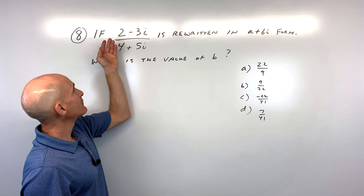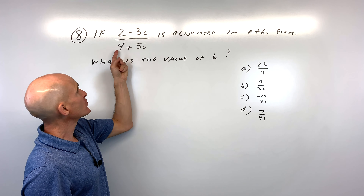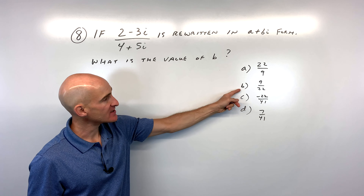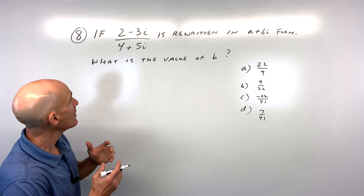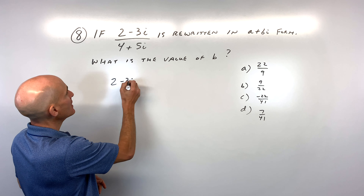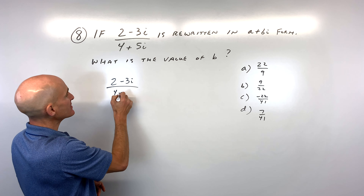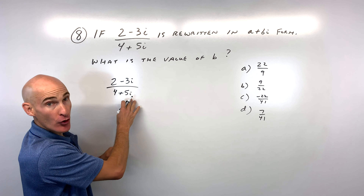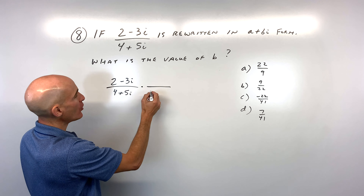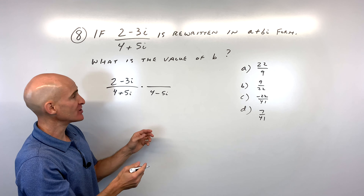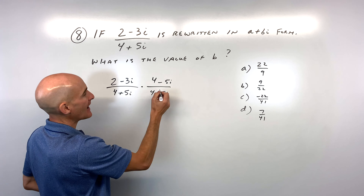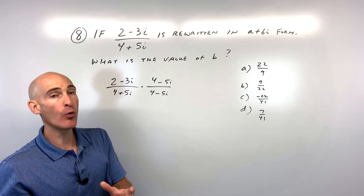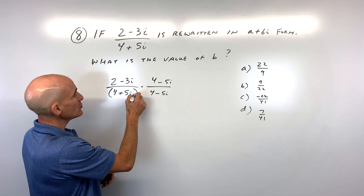Number eight: If (2 minus 3i) divided by (4 plus 5i) is rewritten in a plus bi form, what is the value of b? The key is to eliminate the i in the denominator by multiplying by the complex conjugate. Since the denominator is a binomial with a plus sign changed to minus, the conjugate is (4 minus 5i). Multiply both numerator and denominator by (4 minus 5i).